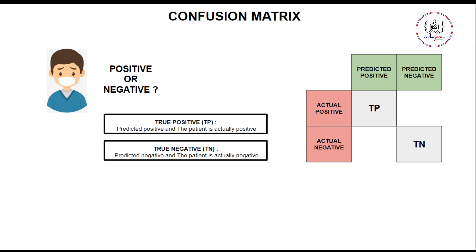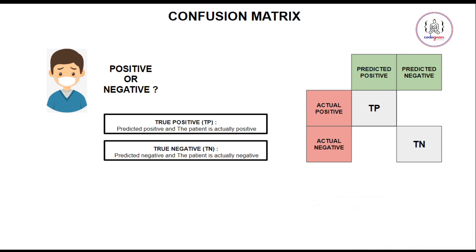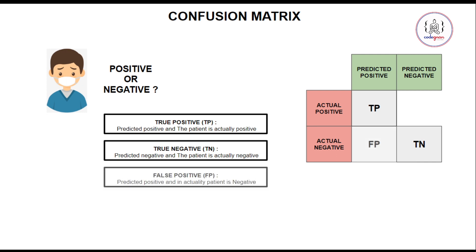Then we have something called true negative. True negative is when your model predicted that the person is going to test negative and they actually are negative. Now, false positive is when a model predicts that the patient is going to test positive but in actuality the person has tested negative.